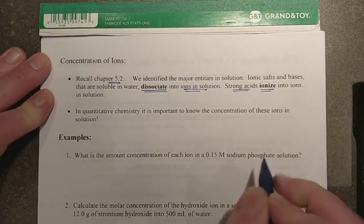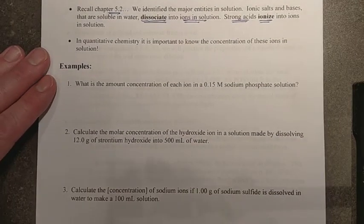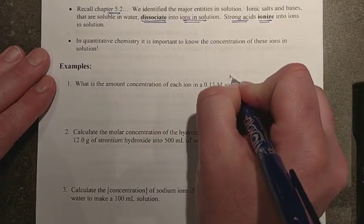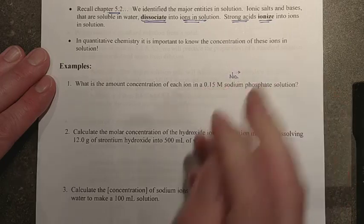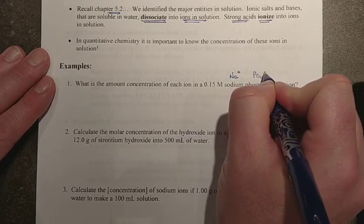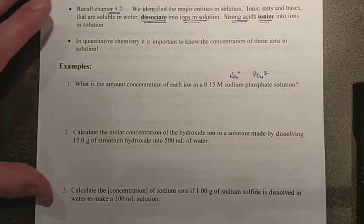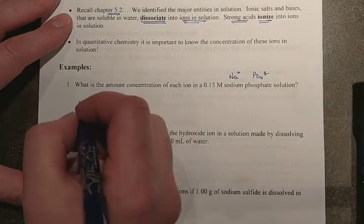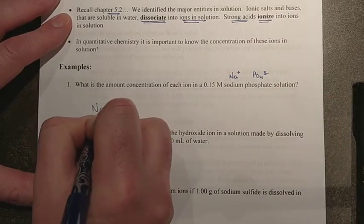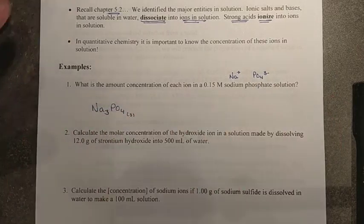We're taking a look at a sodium phosphate solution, so we need the balanced formula for that one. Sodium phosphate is ionic. Na is a 1+ from your data sheet, phosphate is a 3-, so you can see the 3 to 1 ratio needed for my neutral ionic salt. So there we go, there's Na3PO4. All ionic salts are solid.